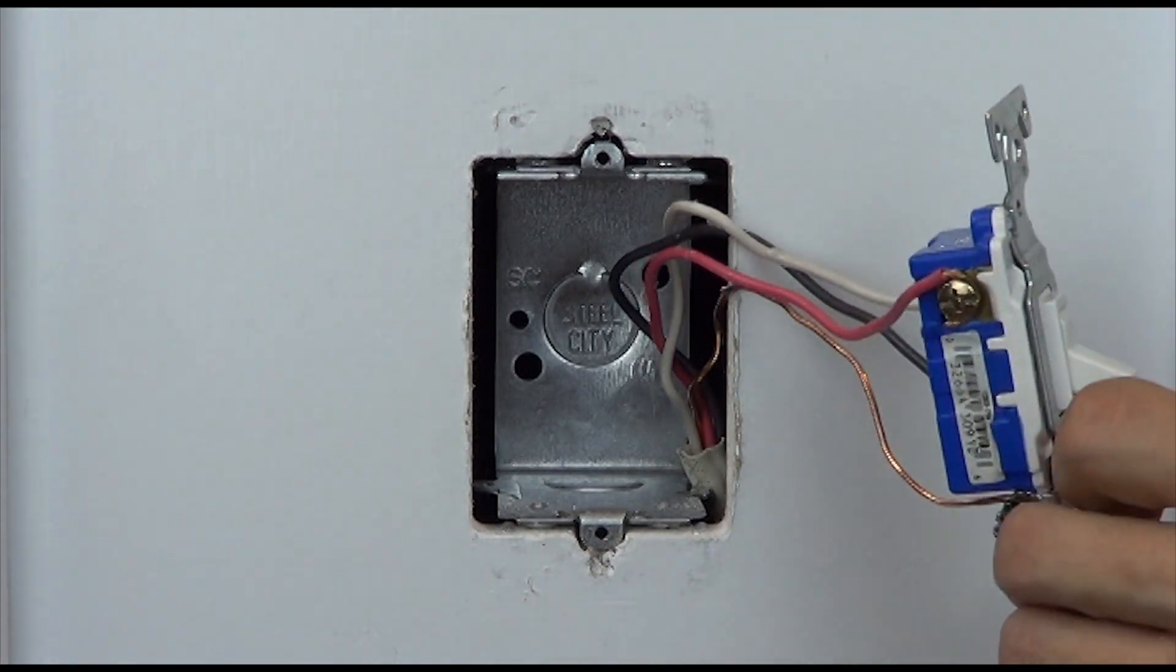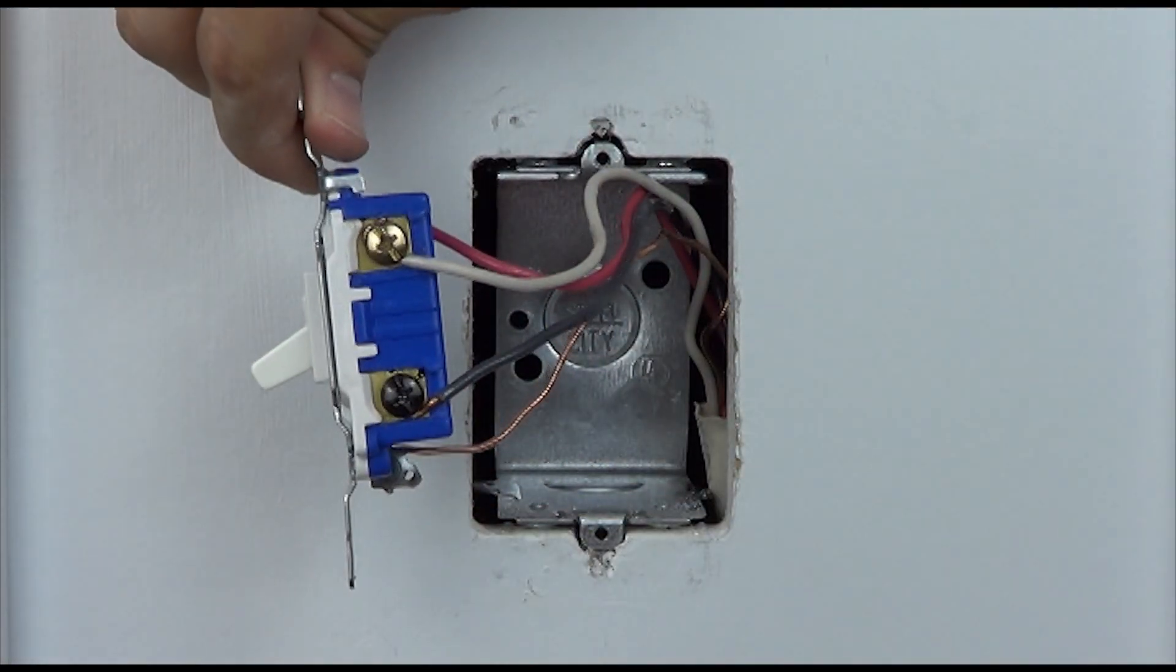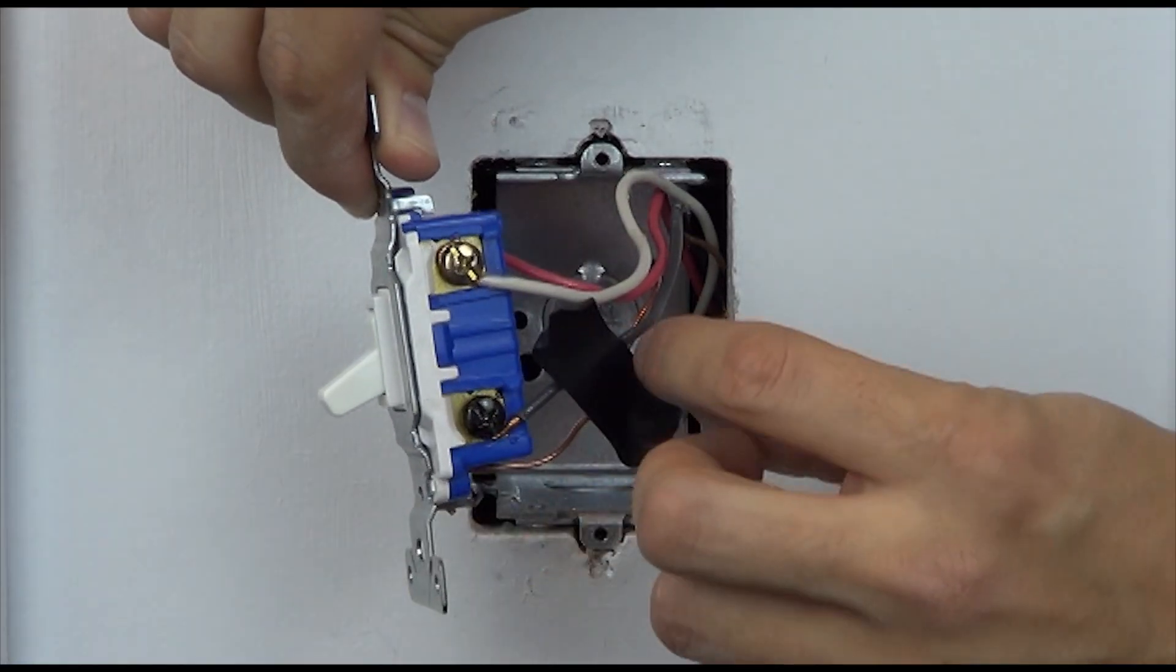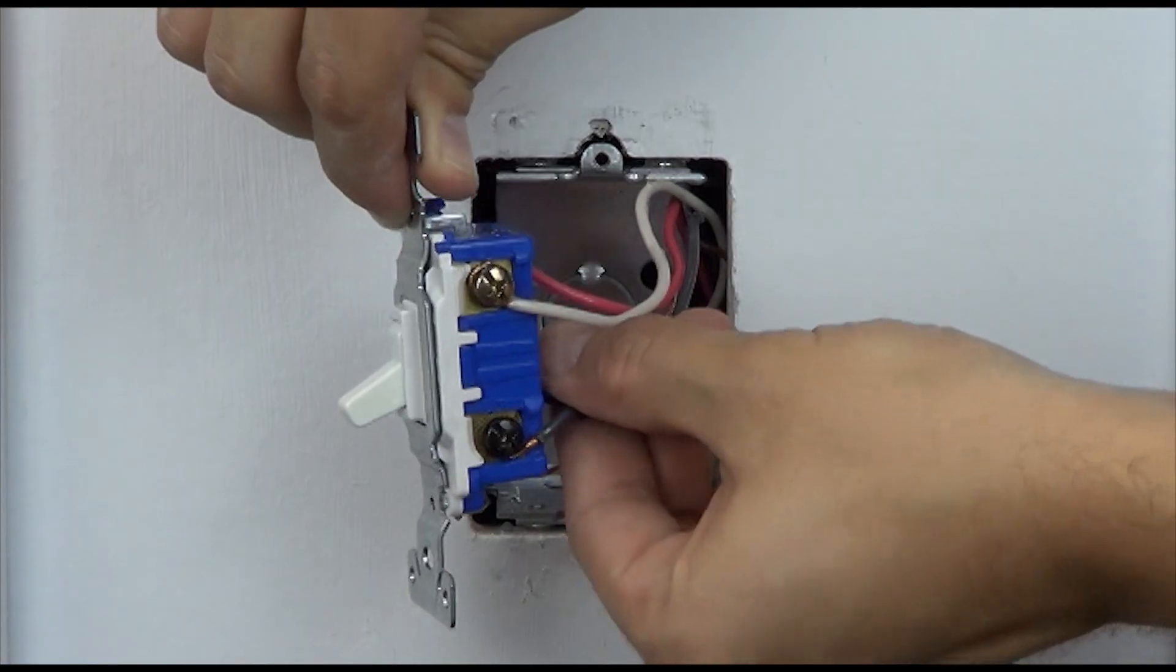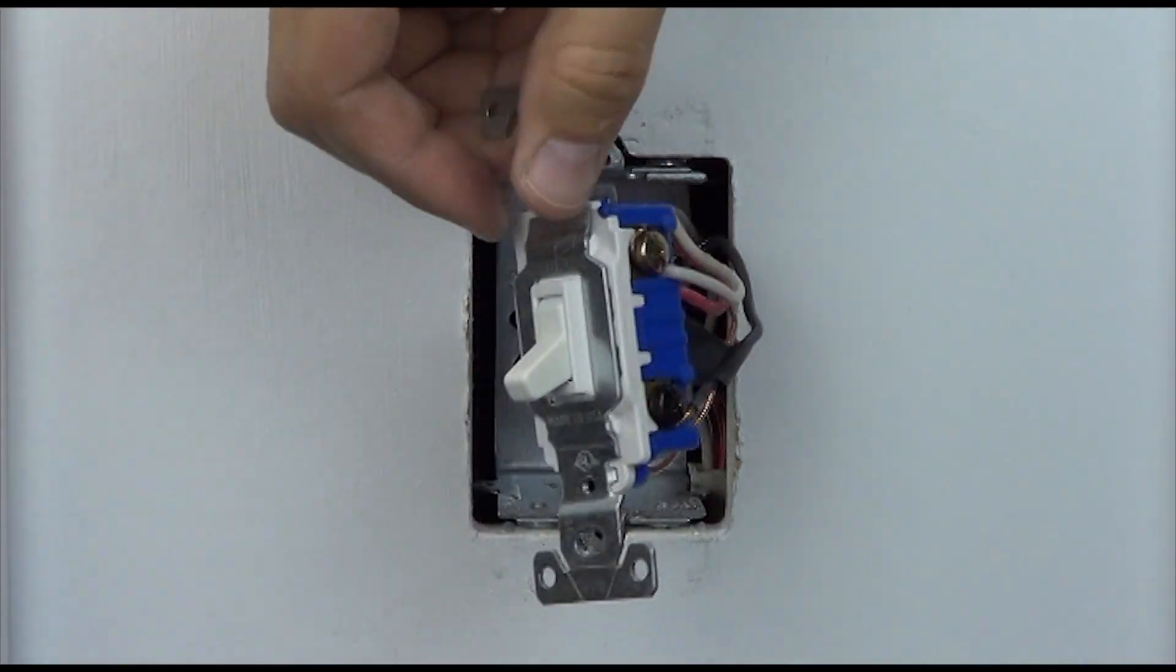Before disconnecting your old device, look at the screw colors on the side of the switch. Take a piece of electrical tape and tag the wire connected to the screw that is a different color than the remaining two. Knowing which wire this is will be important when hooking up your new dimmer.